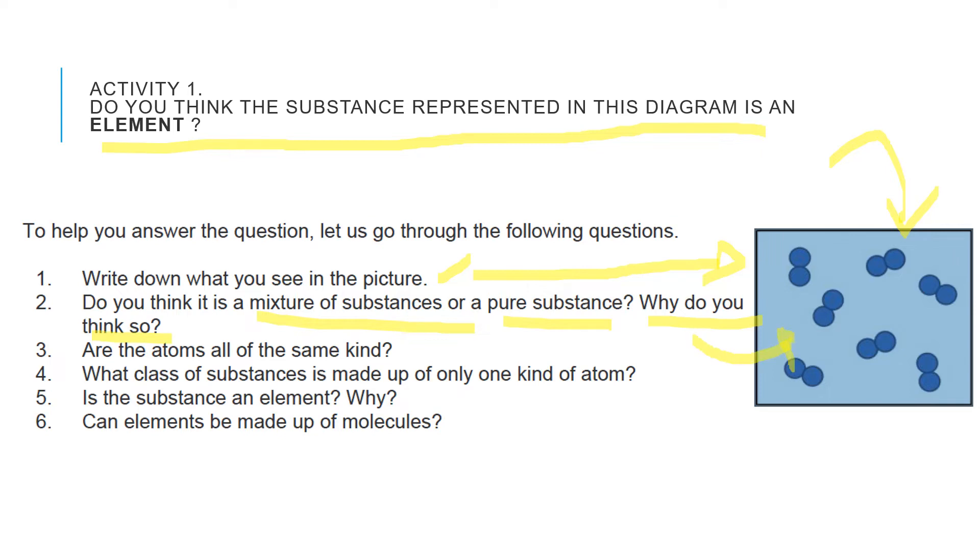Number 3: Are the atoms all of the same kind? Look at this. Are the atoms all of the same kind? Number 4: What class of substances is made up of only one kind of atom? Number 5: Is the substance an element? Why? Number 6: Can elements be made up of molecules? You need to answer that.